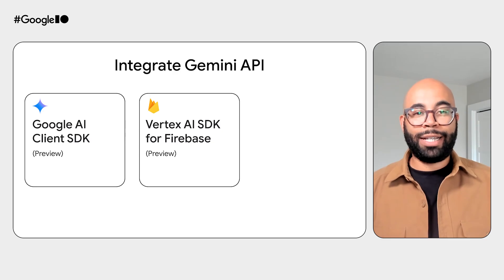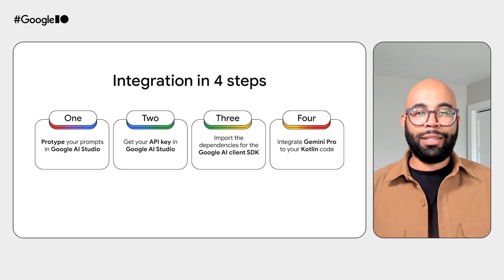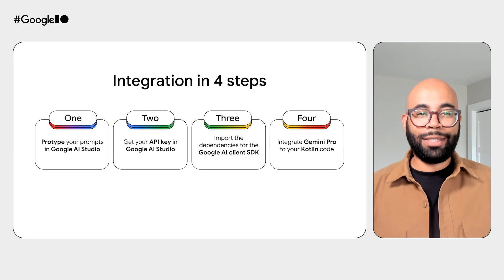With that, let's pass it back to Tomas to review the steps to integrate Gemini Pro into your Android application. There are two paths to integrate Gemini Pro to your Android app: the Google AI client SDK or the Vertex AI SDK for Firebase. There are four main steps using the Google AI client SDK: first, prototype your prompt in Google AI Studio; then generate your API key; add the Gradle dependencies to your project; and finally, integrate the Google AI client SDK into your Kotlin code.